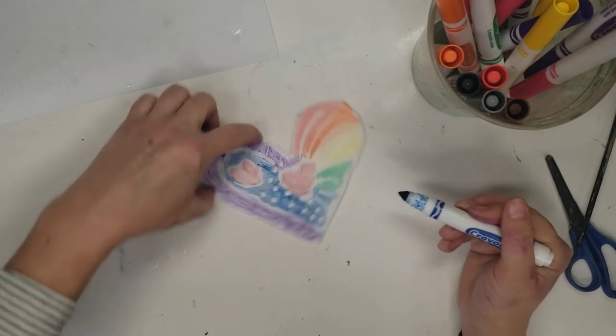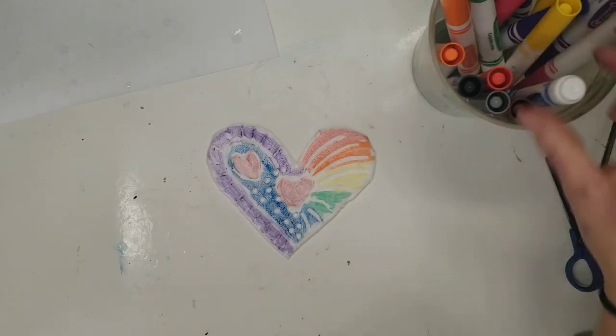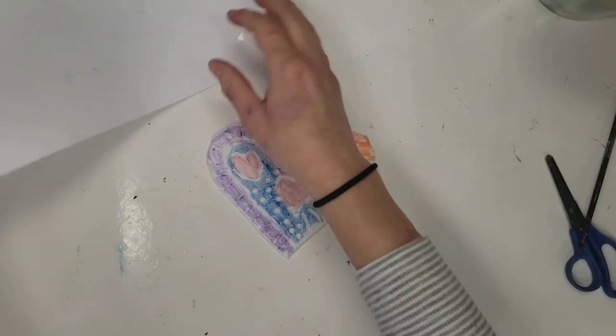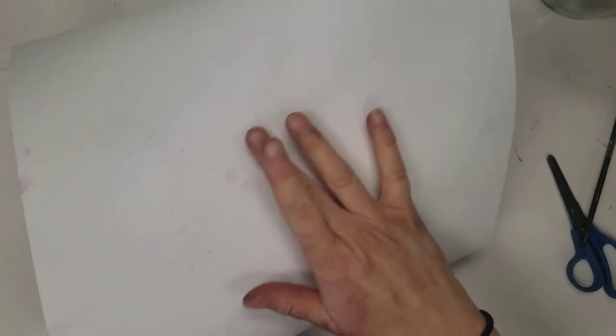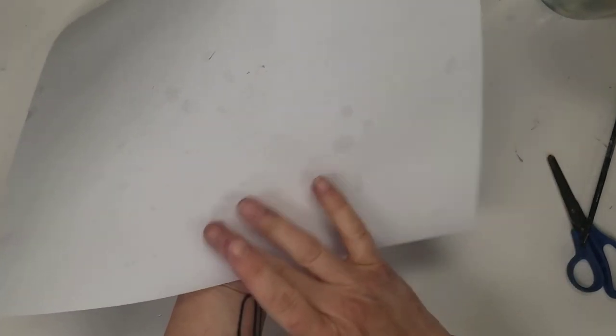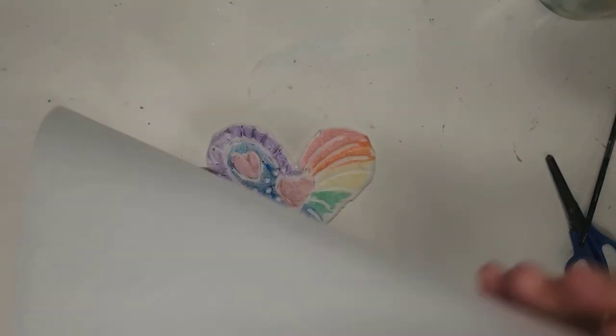Now that I'm done with my heart, I'm going to place my wet piece of paper right on top. Now I can see there's some little dots that are still really really wet so I'm just going to kind of wipe them off. I'm going to take my paper, this is the wet side, I'm going to put it on top of my heart.